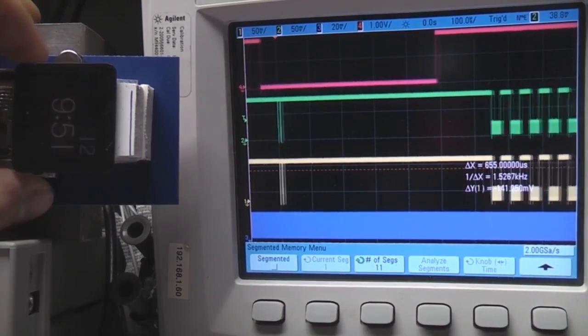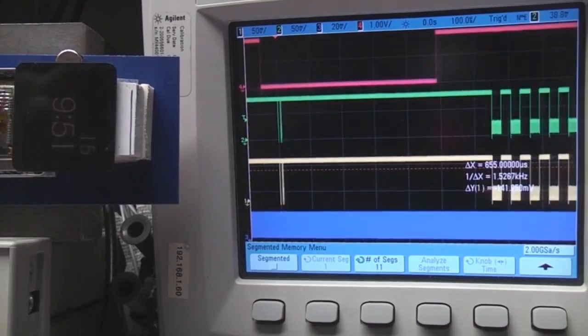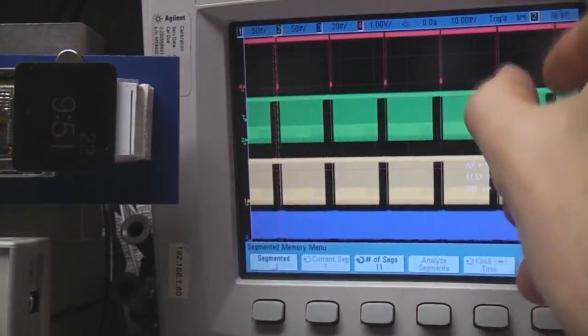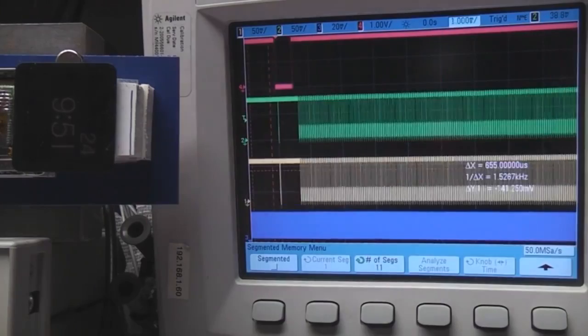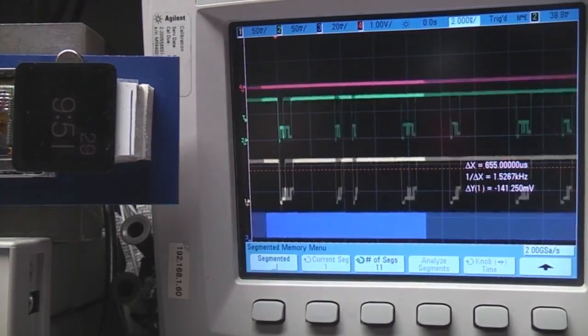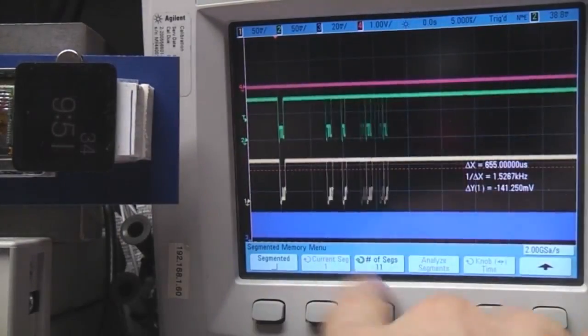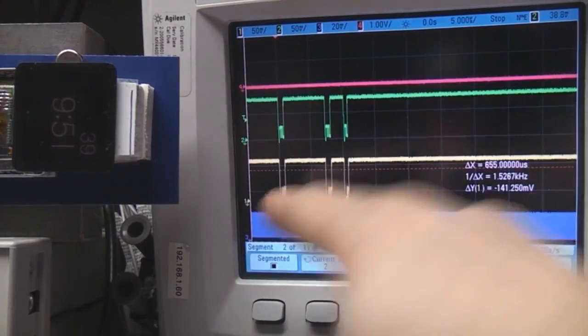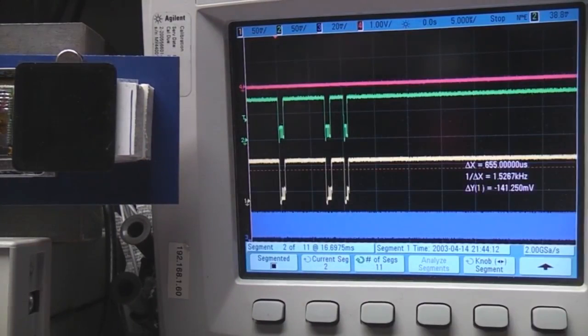The other time this can be useful is if you want to, for example, in a video situation capture the same data from a number of different frames. Again, you've got your 16 millisecond frame thing, but if you want to get a tiny little bit of information from each of these frames, you can run out of memory fairly quickly. So an example of how segmented memory would help: if you want to capture this first sequence on say 10 frames, we set up 11 segments, put segmented mode on, and when it gets a trigger it basically triggers that number of times, so in this case it's 11. And then we can scroll through those acquisitions.